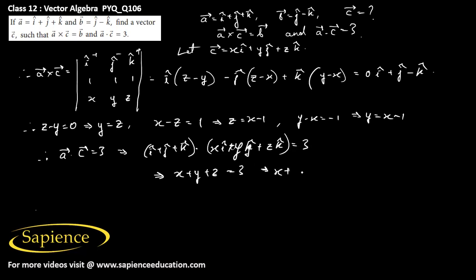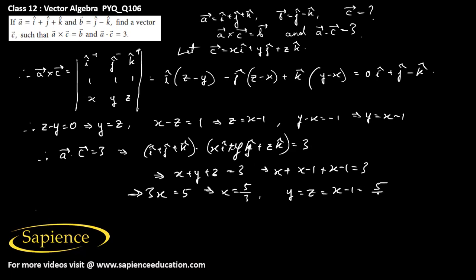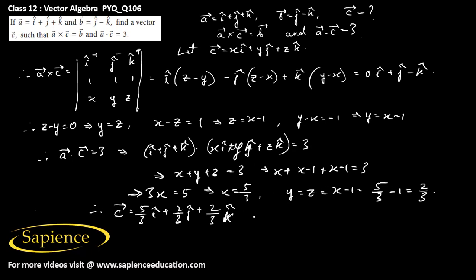Substituting: x + (x - 1) + (x - 1) = 3, so 3x = 5, giving x = 5/3. Therefore y = z = x - 1 = 5/3 - 1 = 2/3. The required vector c is (5/3)î + (2/3)ĵ + (2/3)k̂. This is the final answer.